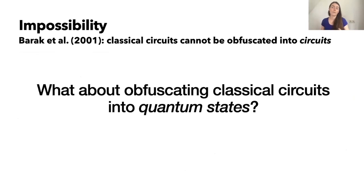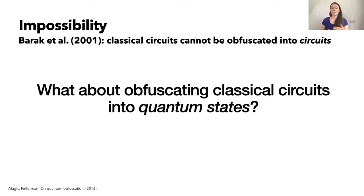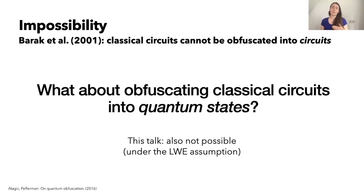So Barak et al. established that classical circuits cannot be obfuscated into circuits. But what about obfuscating classical circuits into quantum states? This potential way out was already observed in 2016 by Alagic and Fefferman. They tried to adapt the proof from Barak et al. to show that this would also not be possible, but this adaptation turned out to be quite difficult and required tools that didn't exist back then. In this talk, I will complete their argument and show that obfuscating classical circuits into quantum states is also not possible, under a variant of the learning with errors assumption.